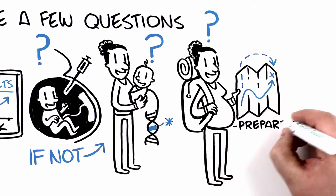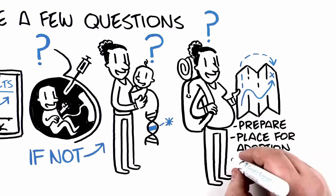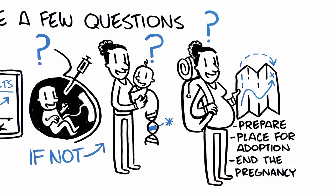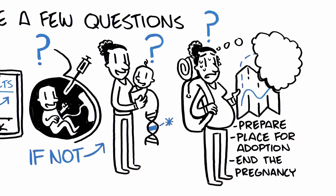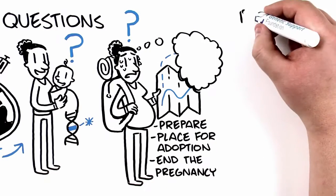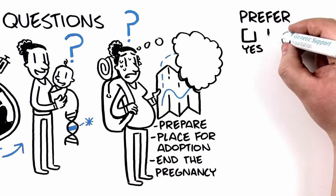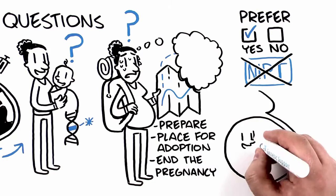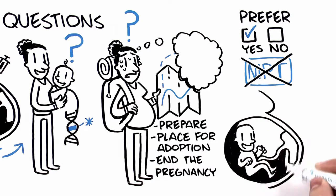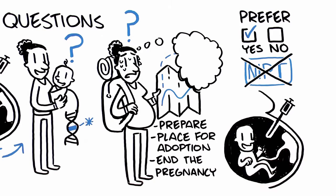For example, would you consider doing anything differently if you knew the baby had a genetic condition? Does more information with the possibility of uncertainty make you anxious? Some women would prefer definitive answers, and since NIPT cannot provide that, they may choose to go straight to a more definitive test such as amniocentesis.